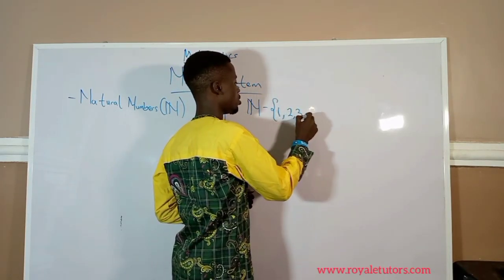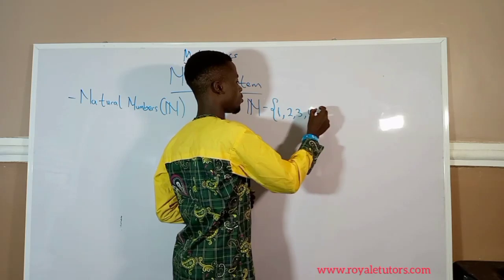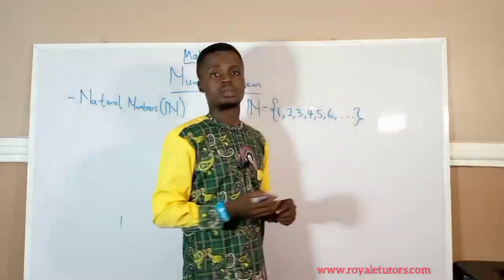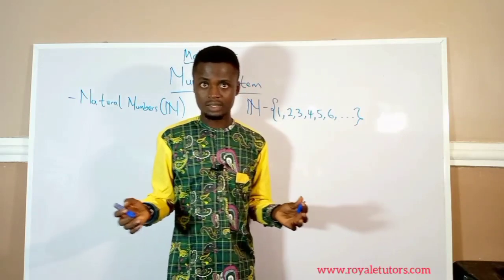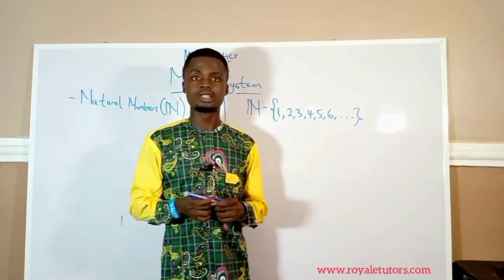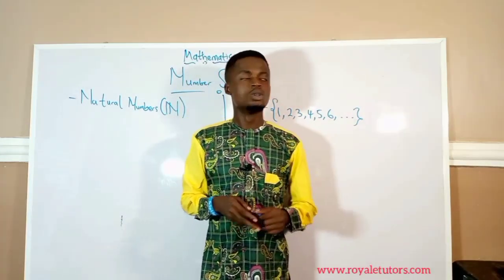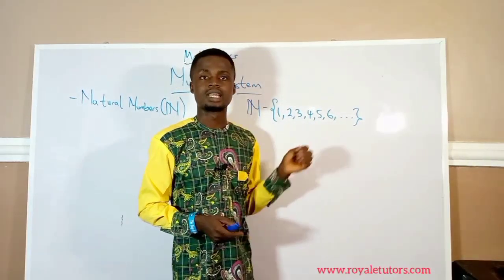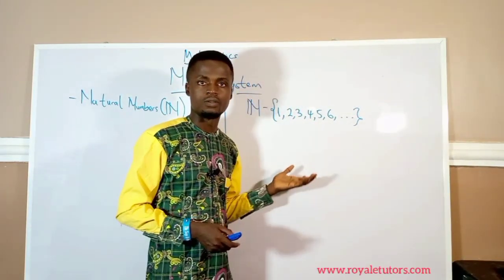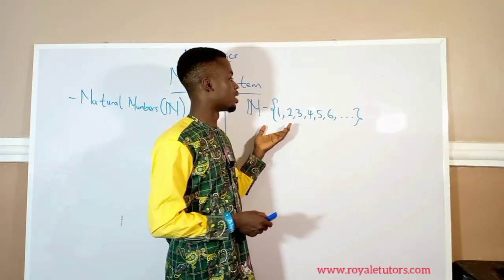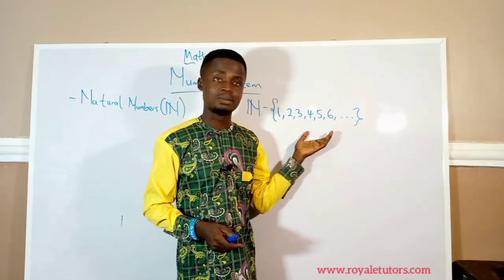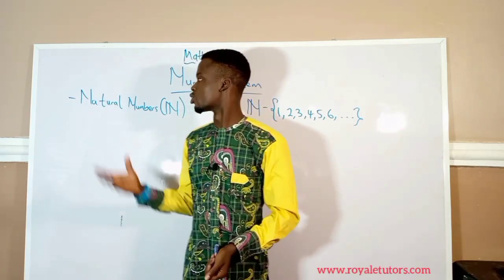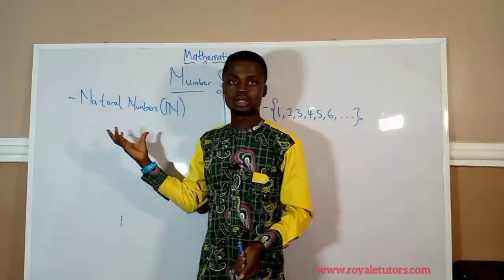One, two, three, four, five, six — and you continue like that because it has no end. You continue to count until you get to the end of what you are counting. If you notice, natural numbers don't have negative numbers, and there is no zero among them. So natural numbers are known as counting numbers from one to positive infinity.